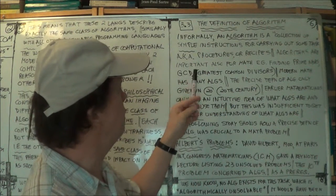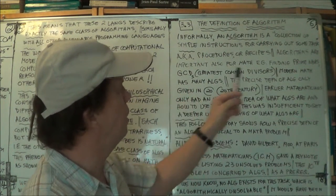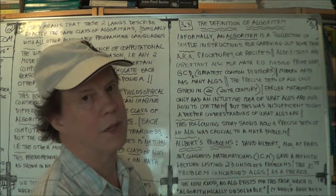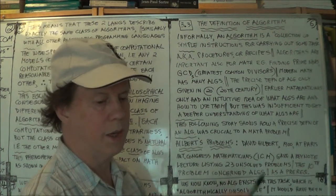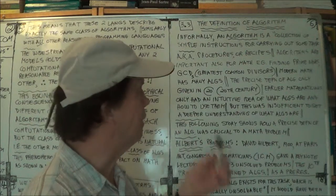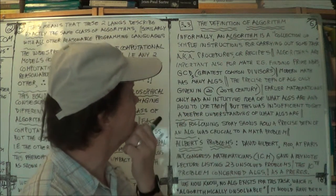Another example, GCDs, greatest common divisors. What's the largest positive integer that will divide into two numbers, like that.